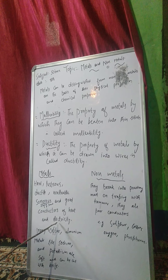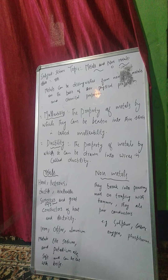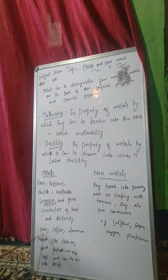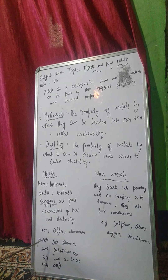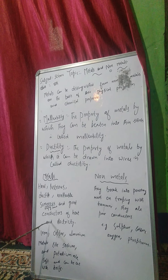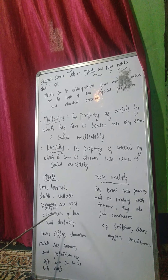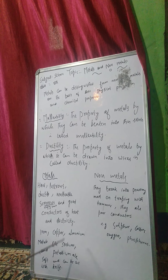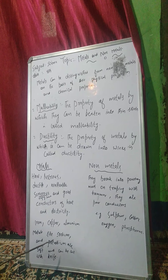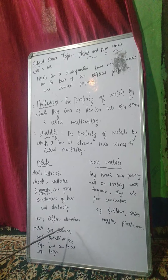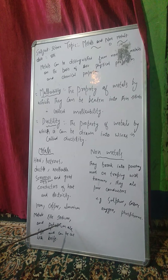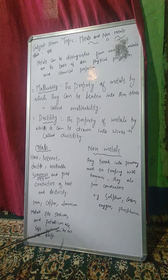Joh metals hota hai, wo heat aur electricity ke good conductors hota hai — unmeh electricity pass ho sakti hai. Examples of metals: iron hai, copper hai, aluminium hai — yeh sab metals hai. Mager is mein exceptional case hai. Metals like sodium and potassium are very soft and can be cut with a knife. Joh sodium hai aur potassium hai, yeh bhi metals hai mager yeh bhoat soft hota hai — unko hum knife se cut kar sakte hai aur pieces mein convert kar sakte hai.